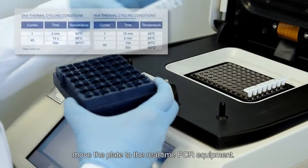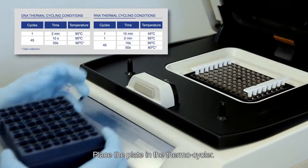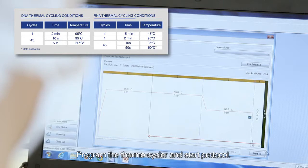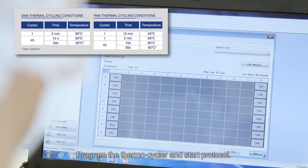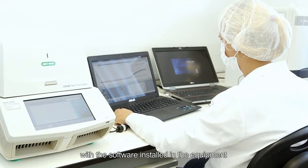After this process, move the plate to the real-time PCR equipment. Place the plate in the thermocycler, program the thermocycler and start protocol. When finished, analyze the results with the software installed in the equipment.